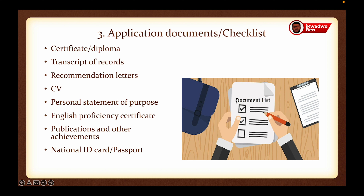The next thing you have to do is prepare your application documents. First on the checklist is your certificate or diploma — if you are a secondary school or high school graduate, prepare your certificate or diploma. If you are a bachelor's degree holder, you'll have your graduation certificate. Next is your transcript of records, which can be requested from your respective institution. Regarding recommendation letters, some universities will request them and some will not, so check the requirements on the respective university's website.